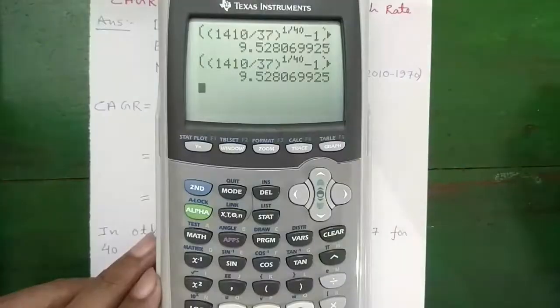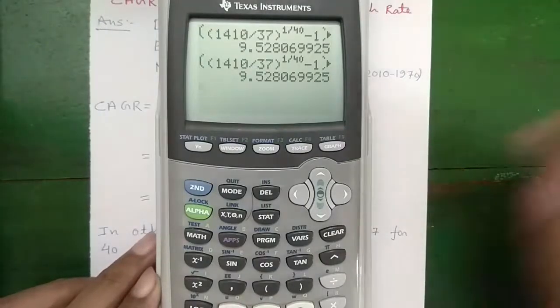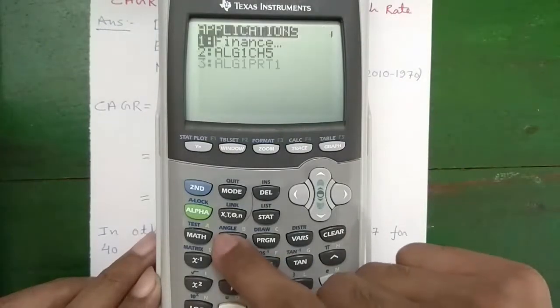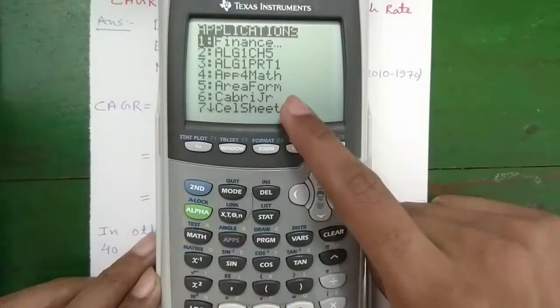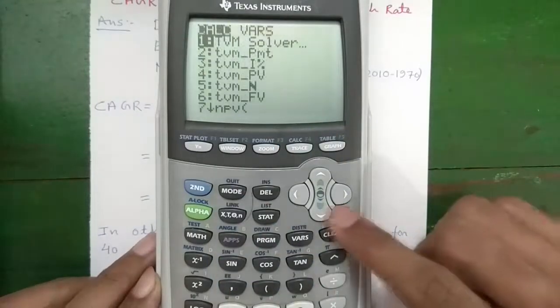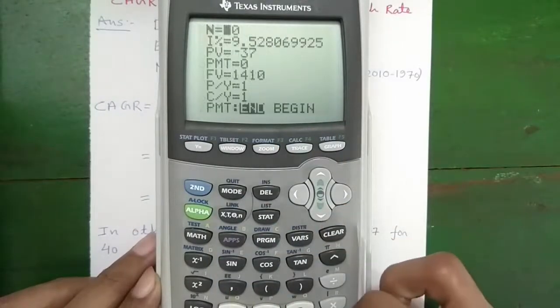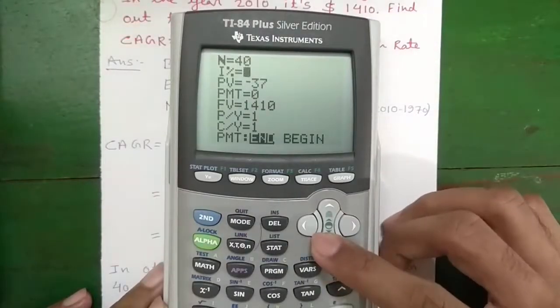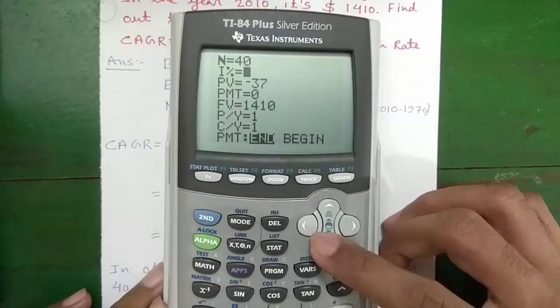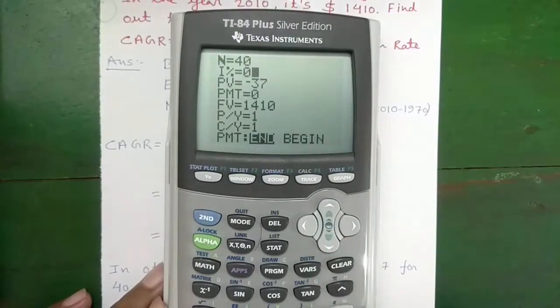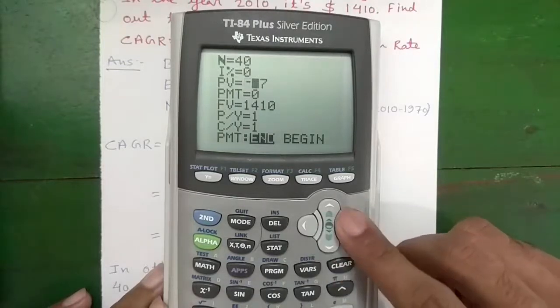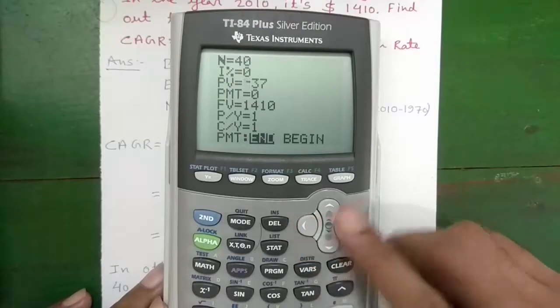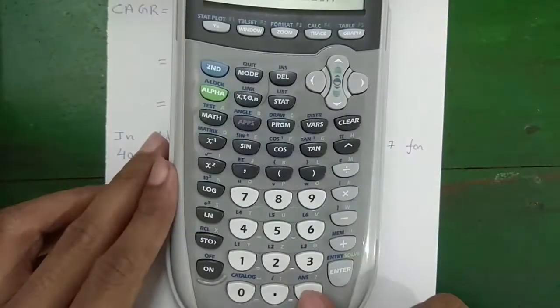Now let's do it using TVM solver. For that press apps button, one for finance, again one for TVM solver. Okay, now the N or number of years that is 40. I or the percentage that we have to find out, so we'll enter zero here for now and press enter. PV will enter 37 our initial value, but we'll enter negative 37. For negative use this button.